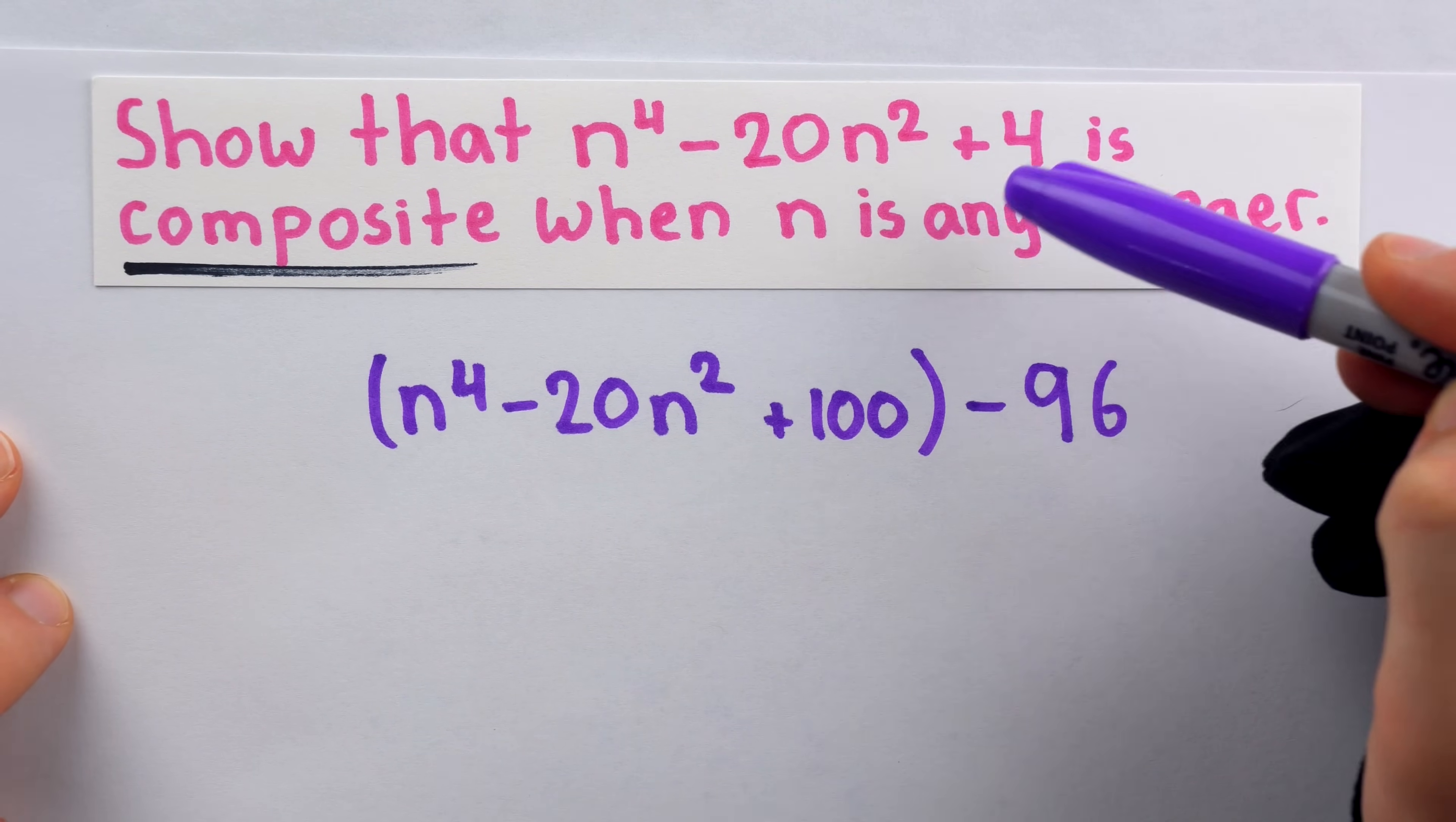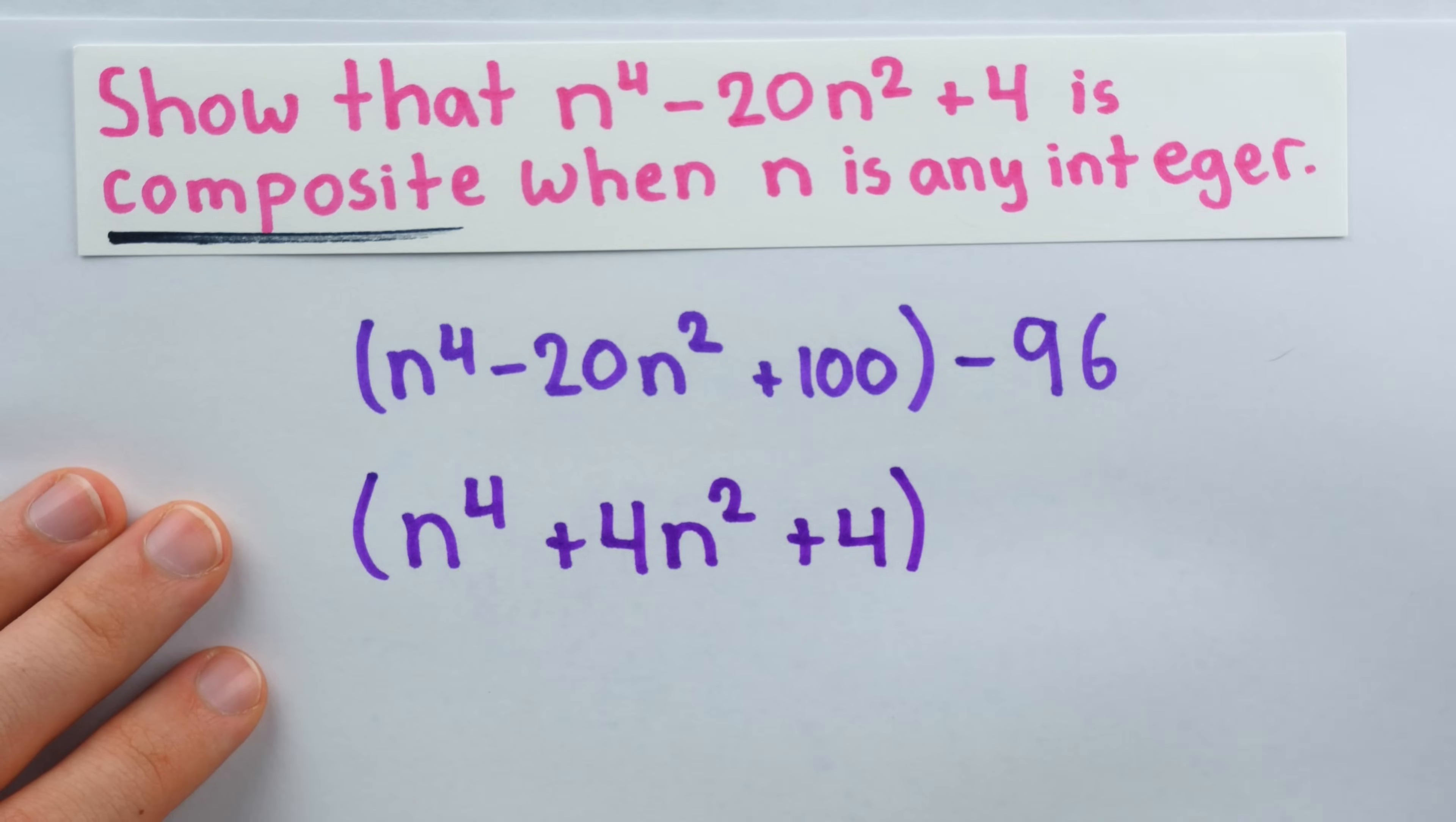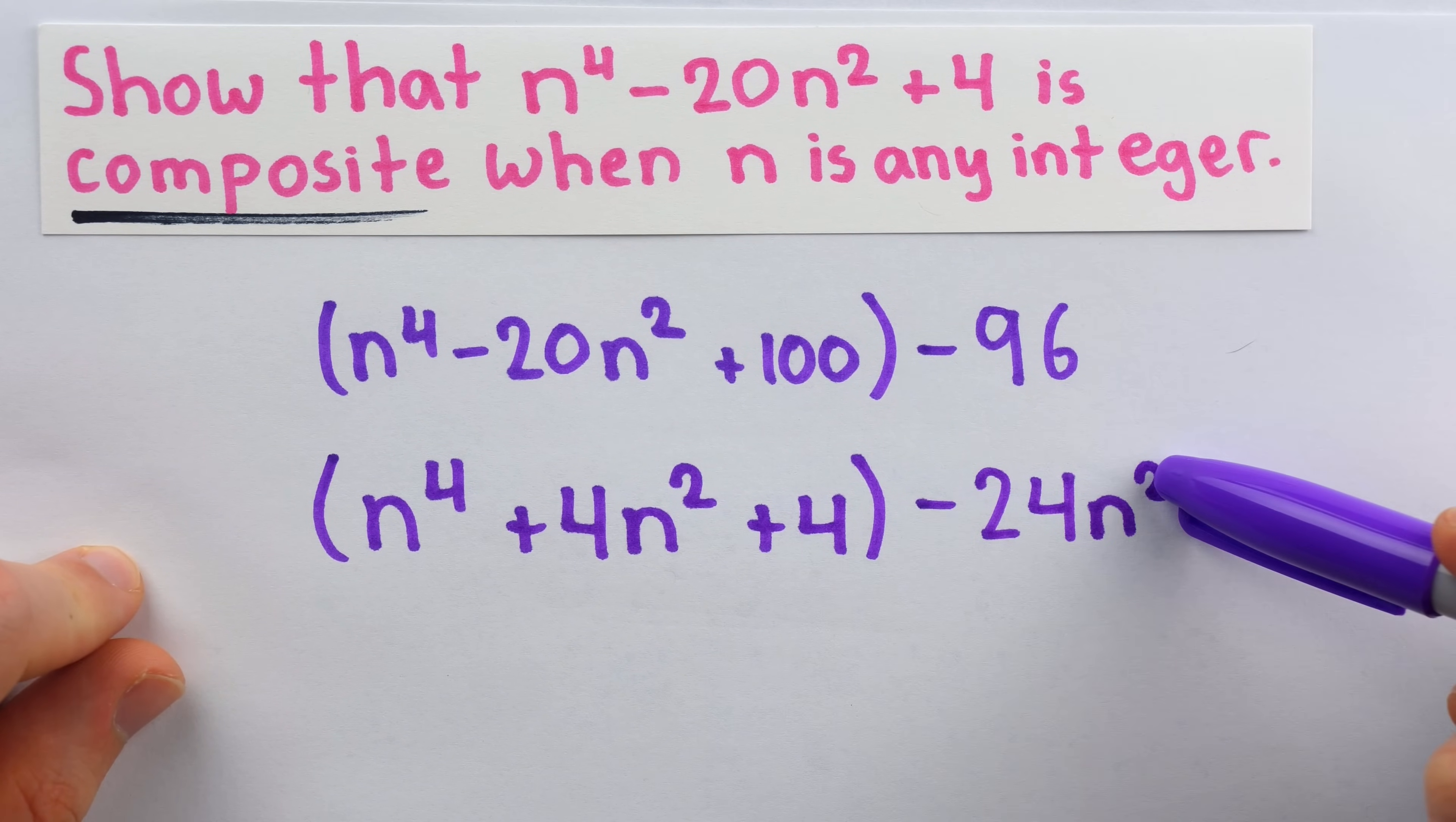Well, instead of adjusting the constant to get a perfect square, let's try adjusting this next term, the coefficient of n squared. We could change it so that that middle term is plus 4n squared. Then that constant of plus 4 would work out fine, and we'd have to subtract 24n squared so that in the end, everything is the same as the original polynomial. Now, we've made this a perfect square. This is n squared plus 2 squared. But again, 24n squared isn't a perfect square.